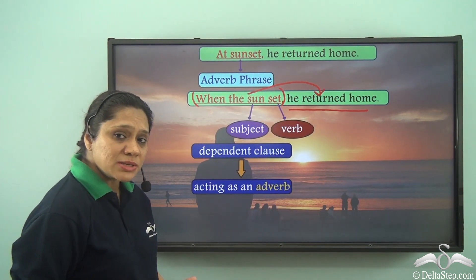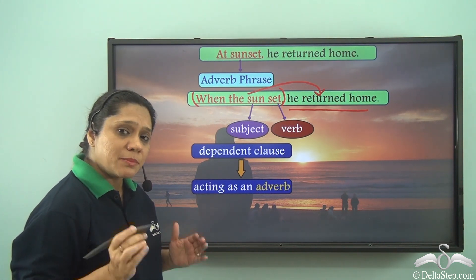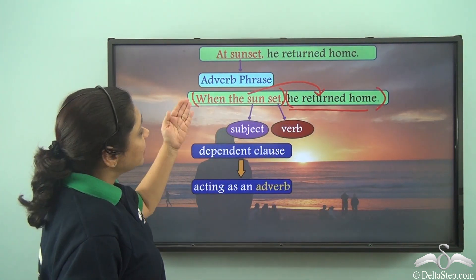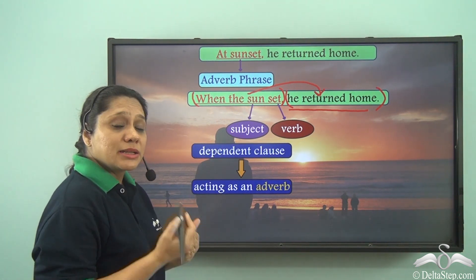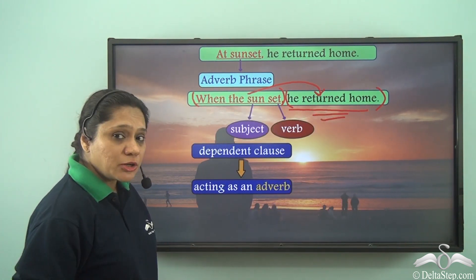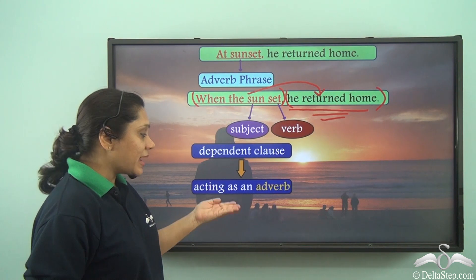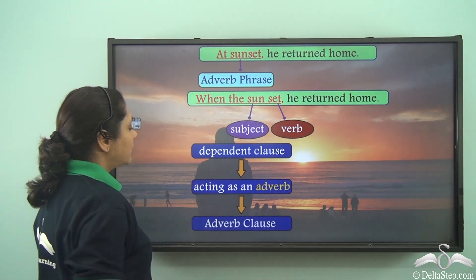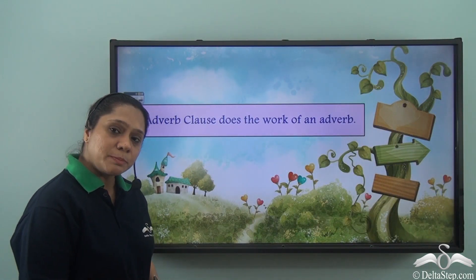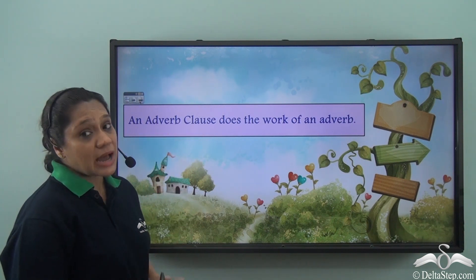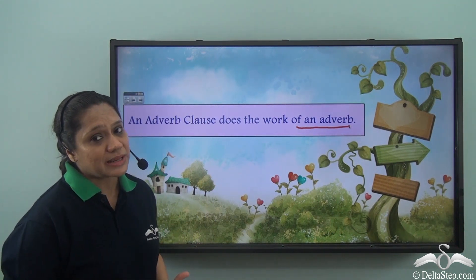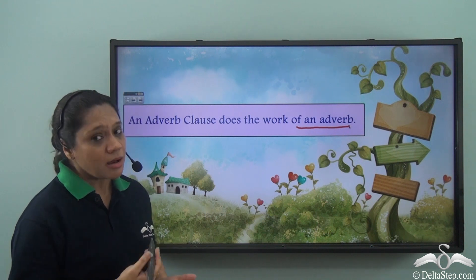This dependent clause 'when the sun set' is describing the verb 'returned' in the main clause 'he returned home,' which can stand on its own. So 'he returned home' is the independent or main clause, and 'when the sun set' is the dependent clause acting as an adverb — known as an adverb clause. An adverb clause does the work of an adverb; it is a group of words that does not convey complete sense but has a subject and a verb.